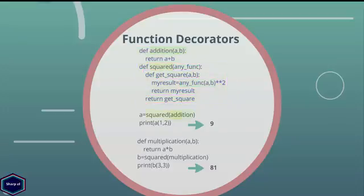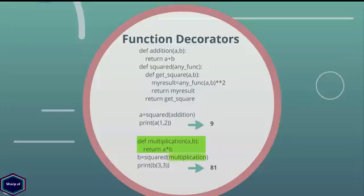Now in main I assign the squared function — which has addition function as argument — to variable a. Now I can call variable a as a function and it returns the sum and square of both arguments. The question arises: why do I need something like that? Imagine if I have not only an addition function but also subtraction, division, modulus, etc., and I want the result to be squared. I have a new function named multiplication which multiplies both arguments. To get the square of my multiplication I just pass my multiplication function as an argument in the squared function and I get the desired result.